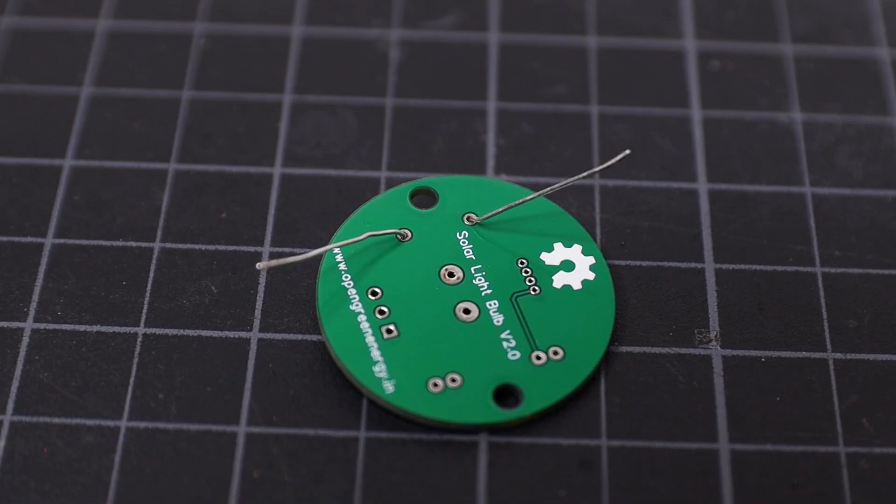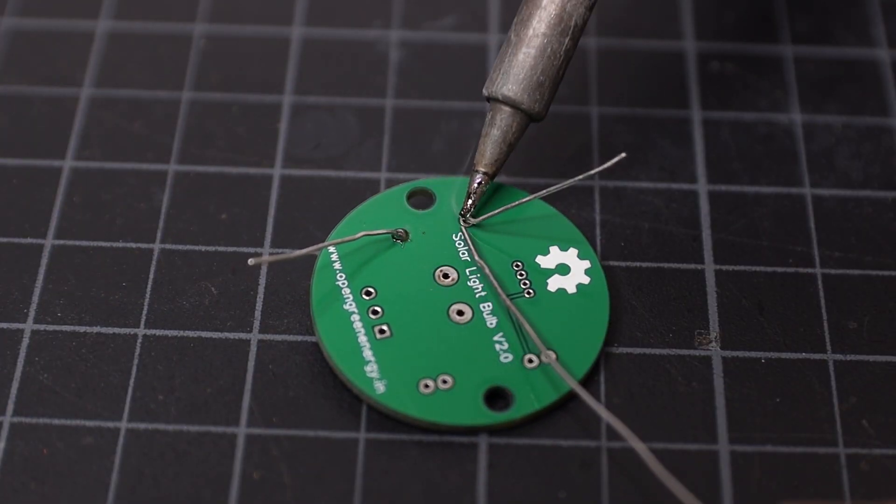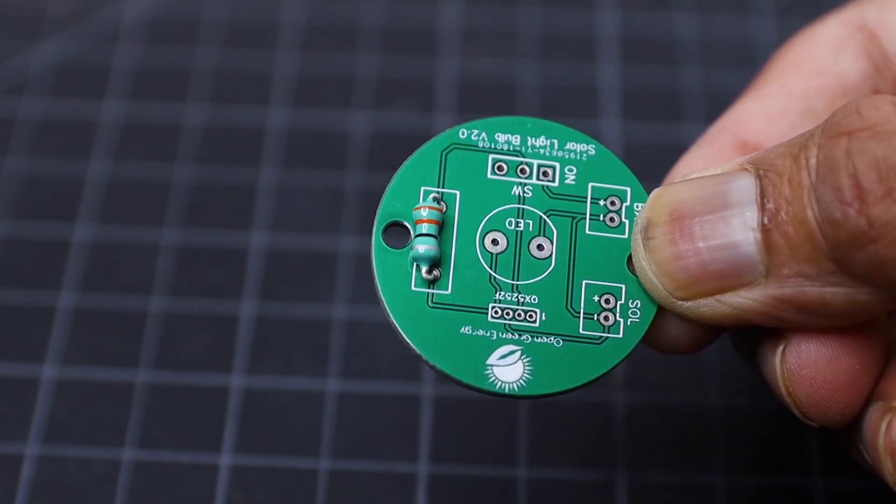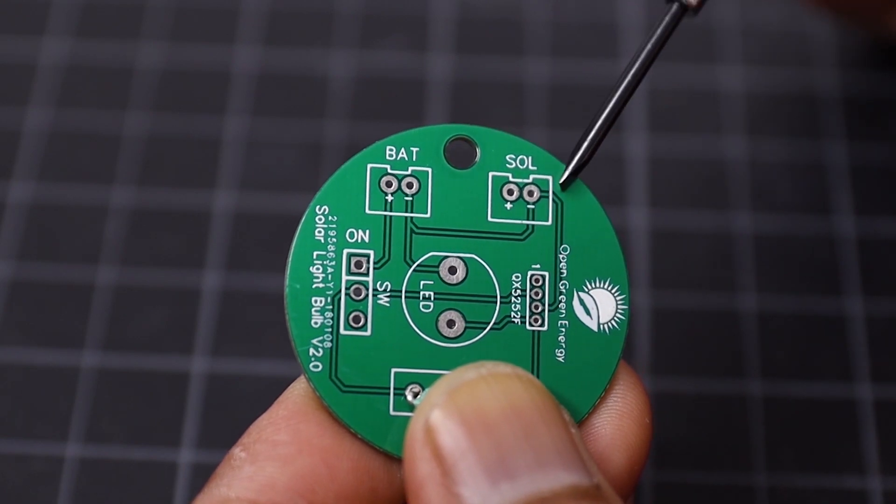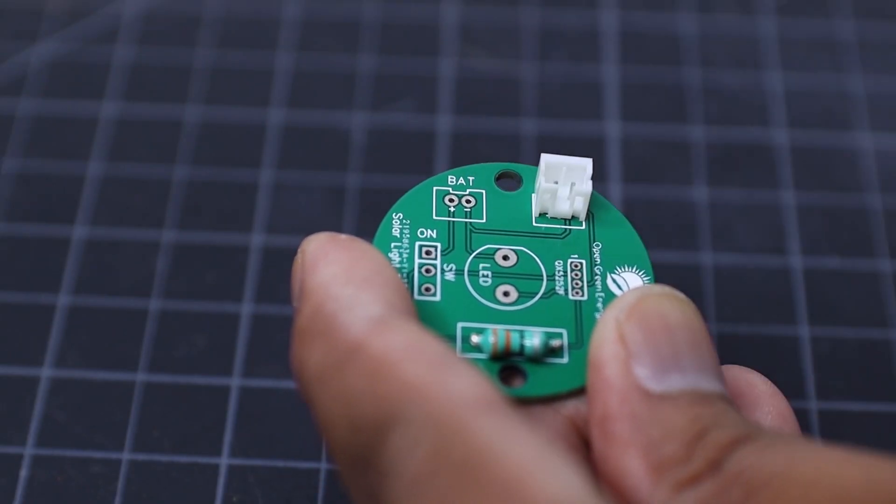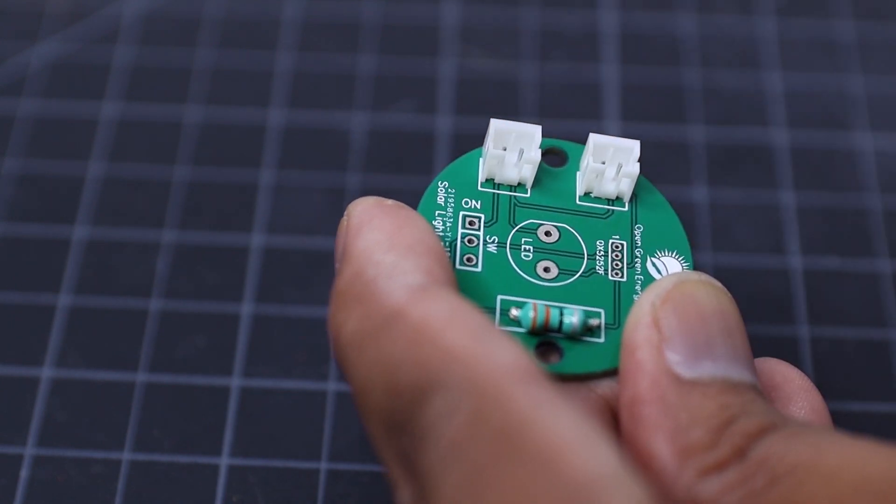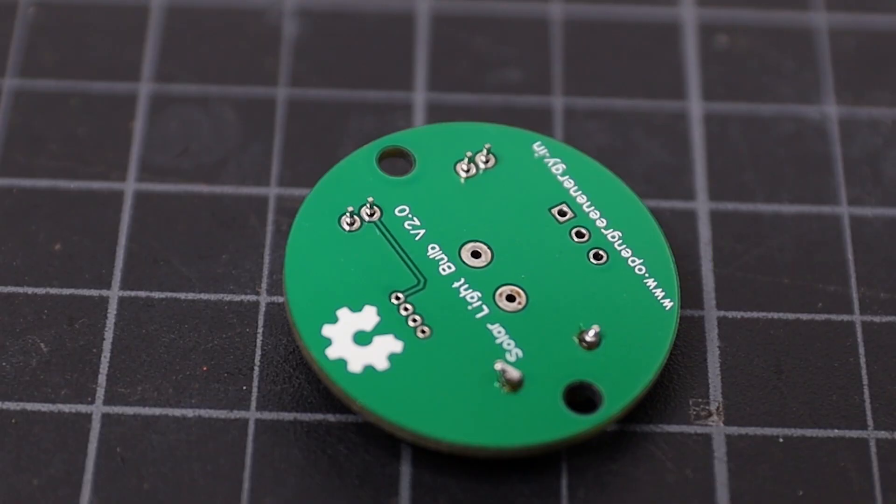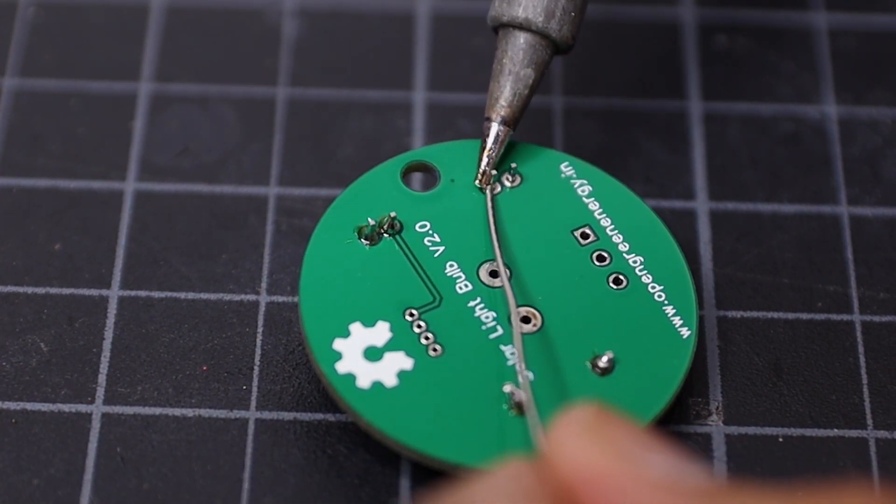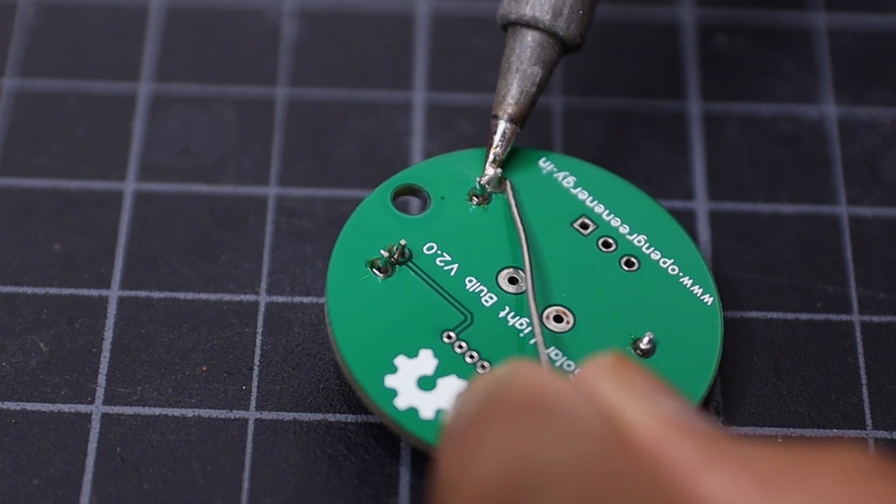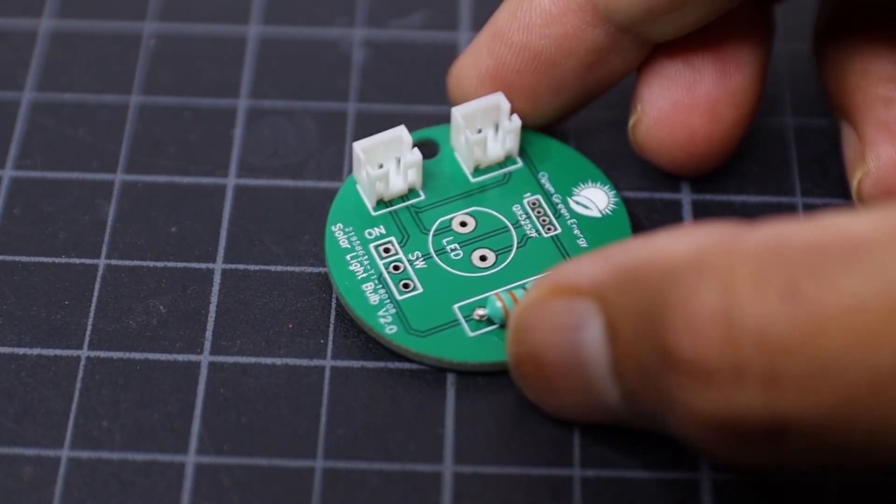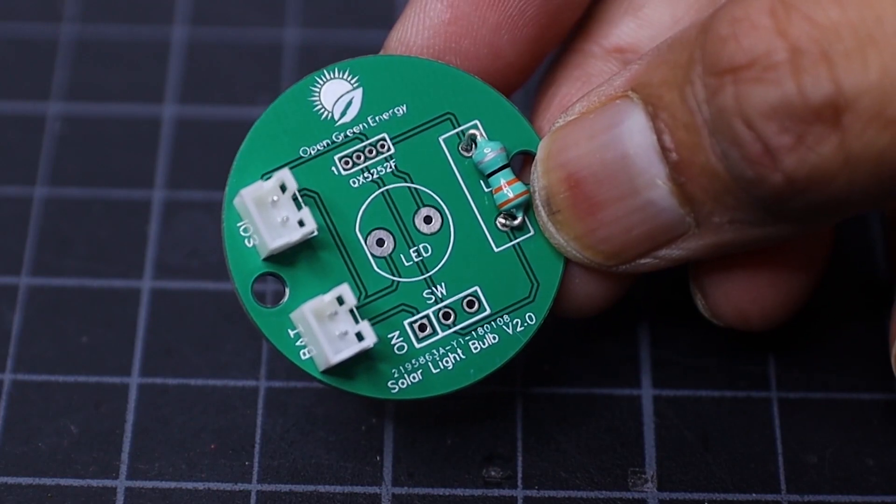Now I am going to solder the two JST connectors. One is for solar panel connection and the next one is for battery terminal connection. During the soldering, confirm that the polarity of the connectors is correct.